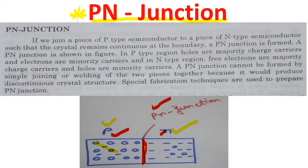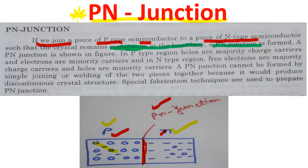This whole crystal is continuous. As we know, these two P-type and N-type materials are not two different blocks — actually this crystal is continuous. If we join a piece of P-type semiconductor to a piece of N-type semiconductor such that the crystal remains continuous — this is a very important thing — the crystal remains continuous, and at the boundary, a P-N junction is formed.